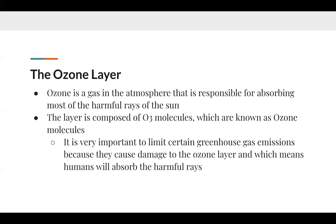The ozone layer is a gas in the atmosphere responsible for absorbing most of the harmful rays of the sun. It is composed of three oxygen molecules bonded together, known as O3 molecules. It's very important to limit certain greenhouse gas emissions because they damage the ozone layer and break down these O3 molecules, which means humans will absorb these harmful rays.